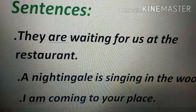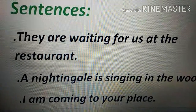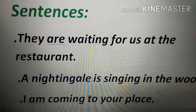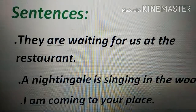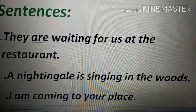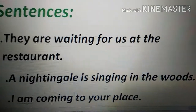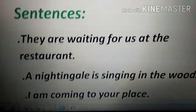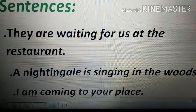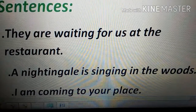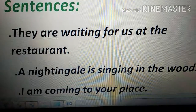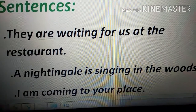Let's look at examples. With plural subjects use 'are'; with singular subjects use 'is.' 'They are waiting for us at the restaurant' — plural subject 'they,' so we use 'are waiting' (are + ing form). 'A nightingale is singing in the woods' — singular subject, so we use 'is singing.' 'I am coming to your place' — 'I' always takes 'am.'